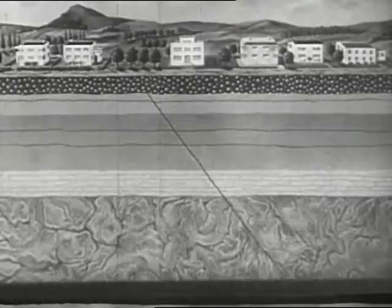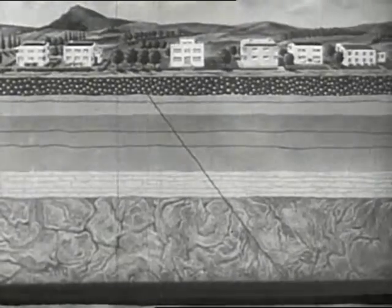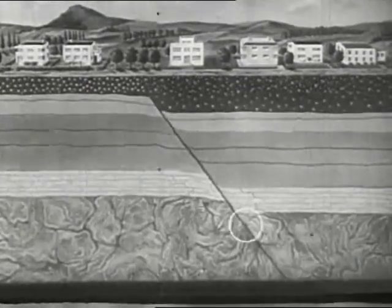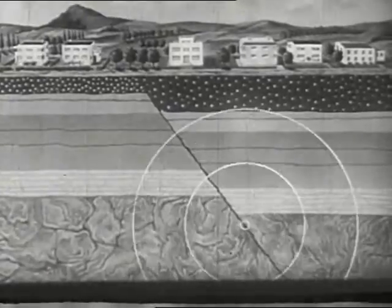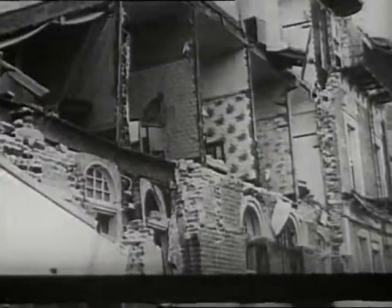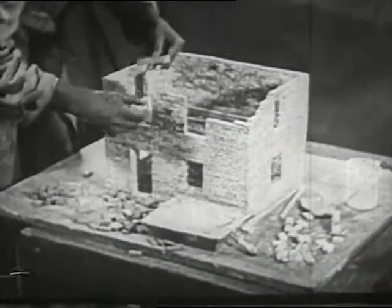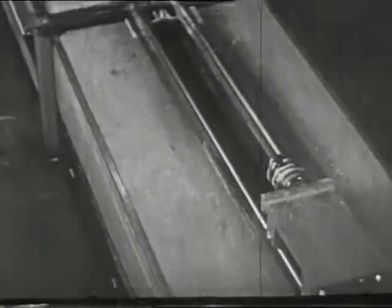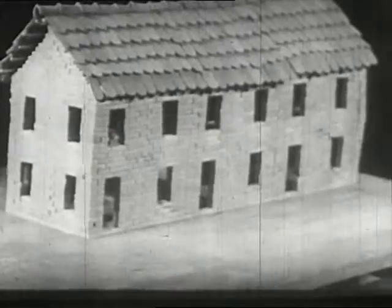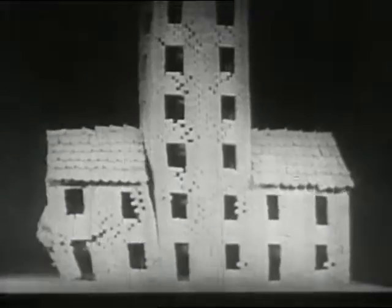Strong earthquakes are mostly caused by earth faults. A fault will generally have an upthrust, thus affecting a large area. We cannot stop these forces of nature, but we can build better buildings and warn people when a quake is likely to occur. Through constant experimentation, we may someday be able to build homes to withstand the forces of nature that threaten us.